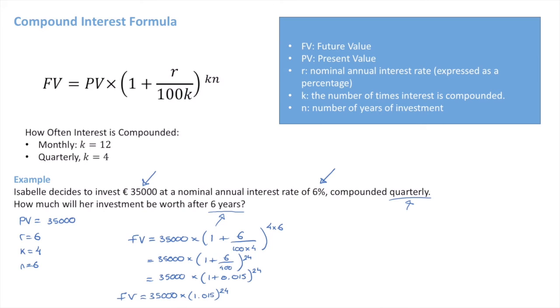And so using our calculator and rounding to the nearest unit, we find that the future value is equal to 38,271. So by the end of her investment,